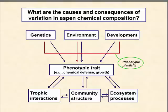We've also been interested in the consequences of variation in those phenotypic traits — particularly chemical defenses — on trophic interactions with insects and, to some extent, mammals, and how those in turn influence community structure and various ecosystem processes such as nutrient cycling.